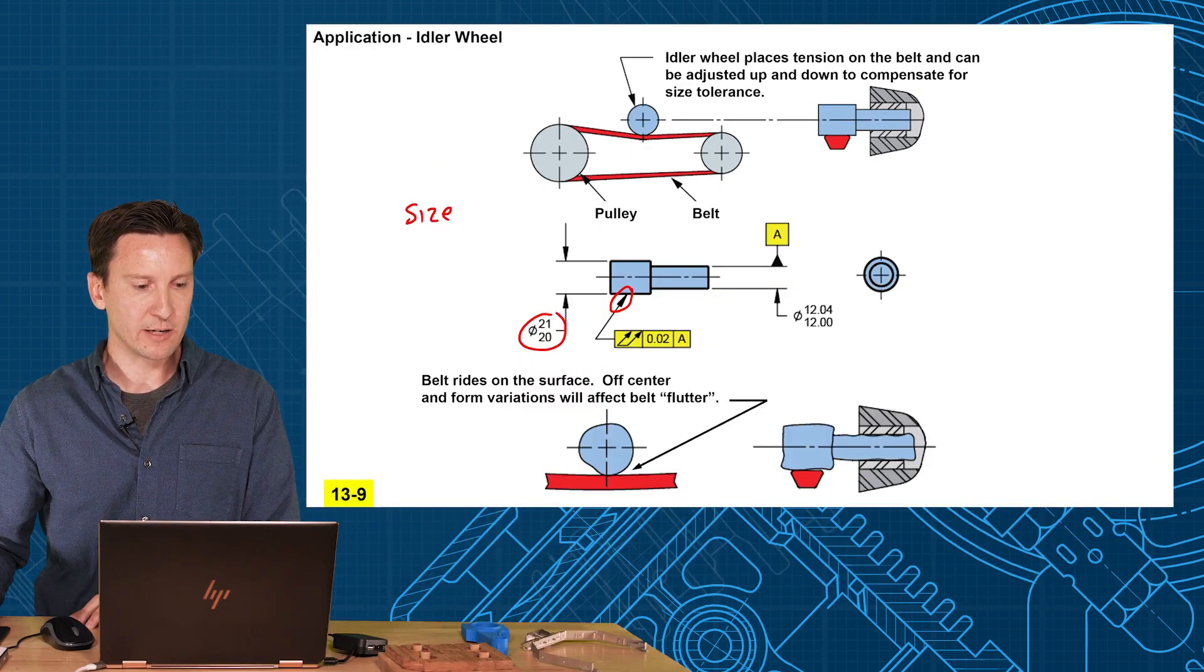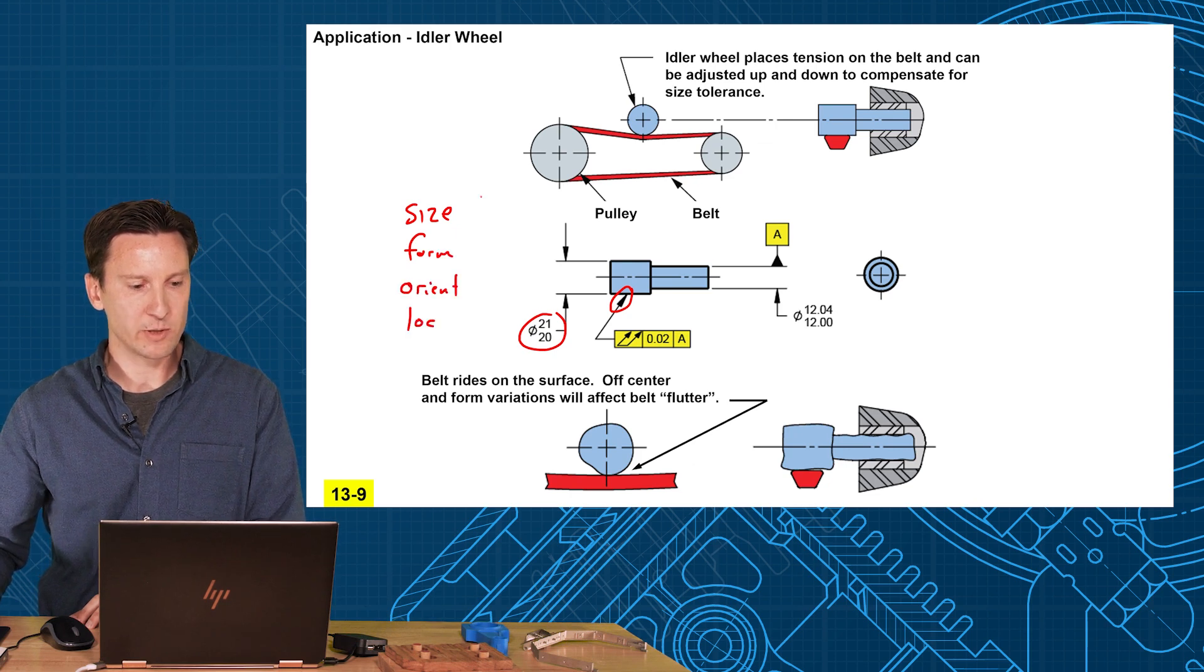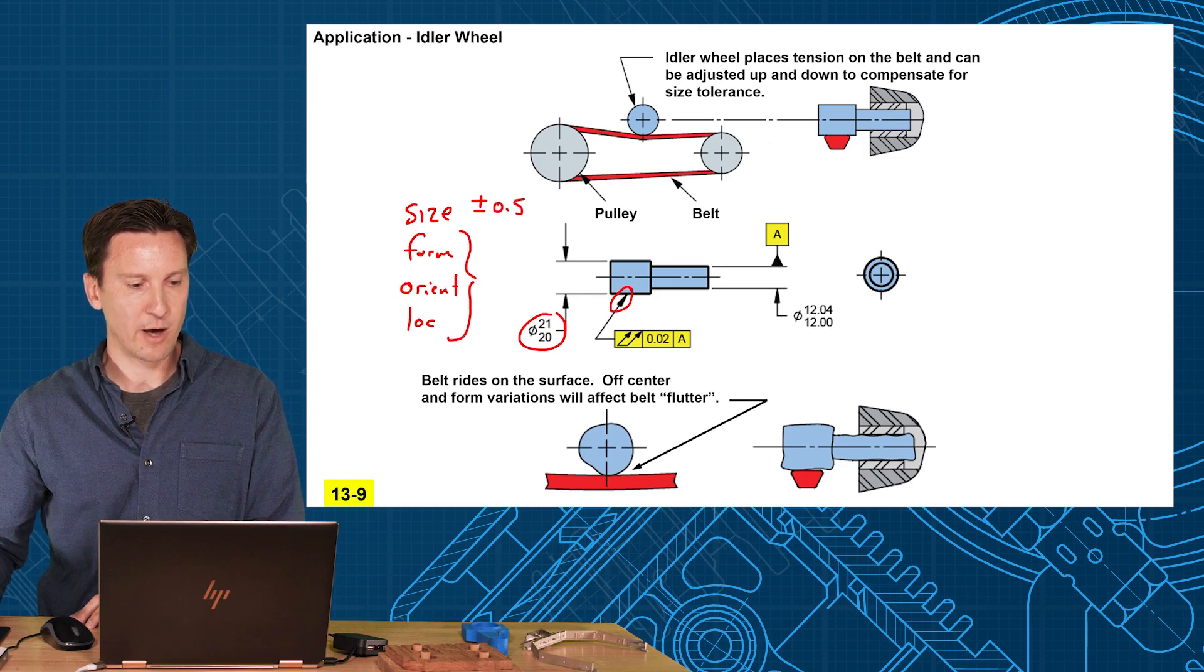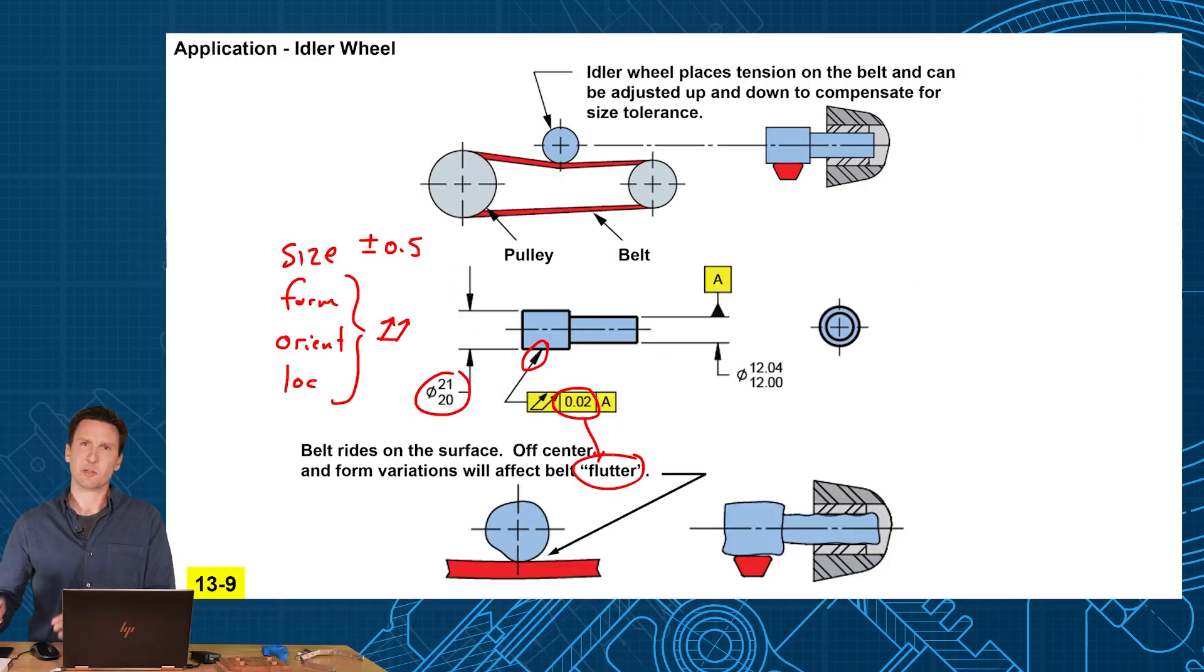So you have a large size tolerance, plus or minus half a millimeter. I don't care about that, but what I care about is how that surface runs relative to my axis. I want it to run true. I want to control form, orientation, and location. And that's perfect for a runout. So remember those four controls, size, form, orientation, and location? Well, we got a big plus or minus to cover the size. We don't really care about that. And then we'll have runout step in and control all the other stuff within a tight number. And all of that stuff will affect the belt flutter. I couldn't come up with a better word than flutter or bounce around or movement on the belt as it rotates. But that's, I think, a perfect place for our runout.